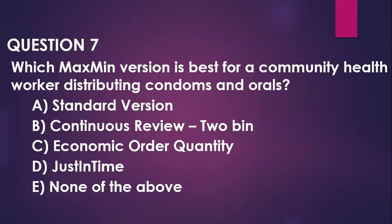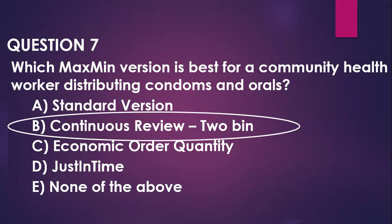Question number seven: which max-min version is best for a community health worker distributing condoms and the like? That will be the continuous review system — the two-bin system where you keep two bins. Once one bin is finished, that is like it has reached a minimum, so you now replace it with another bin while the one that was standing there is now used.